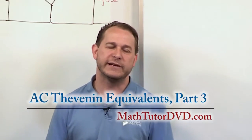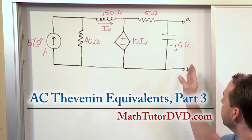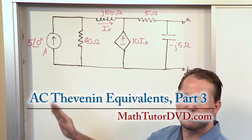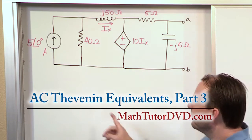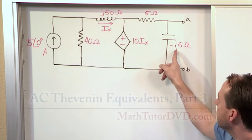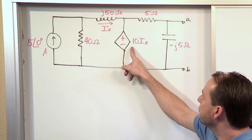Hello, welcome to this lesson in AC circuit analysis. We're going to find the Thevenin equivalent in this circuit between A and B. Notice the problems are getting a little more complicated each time. In this case we have a current source, a resistor, an inductor, another resistor, a capacitor, and we have a dependent voltage source.